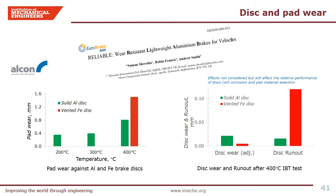Post-AK Master test results are shown in this slide. The left plot shows pad wear values at various brake temperatures up to 400 degrees Celsius. Iron disc measurements were taken only after 400 degrees C IBT. Pad wear against the PEO coated aluminum disc remains almost similar at 200 and 300 degrees Celsius, but there was a sudden increase at 400 degrees C — almost twice the wear. Interestingly, for the same 400 degrees C IBT, the pad wear against an iron disc is almost twice that of the PEO coated aluminum disc. The right graph shows disc wear and disc run-out at 400 degrees C. Disc wear was higher for the PEO coated disc but still retained two thirds of the coating thickness. However, disc run-out was substantially lower for the PEO coated disc compared to the iron disc.